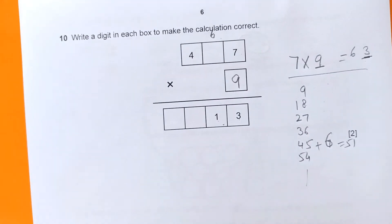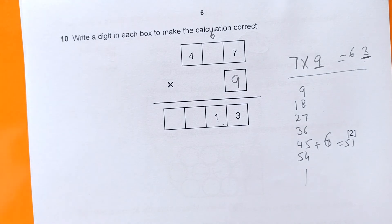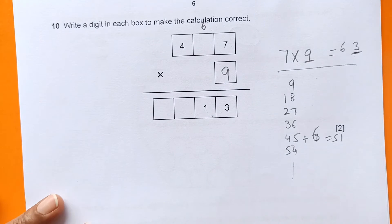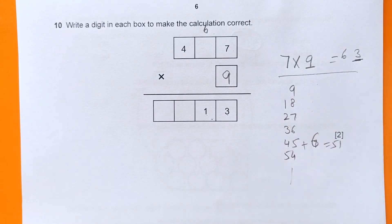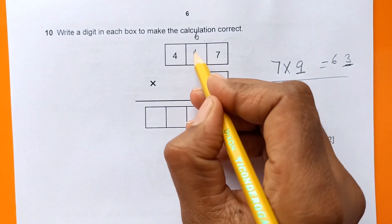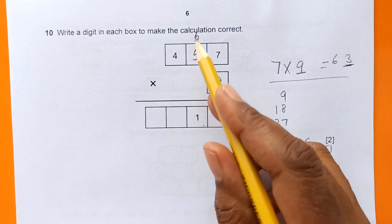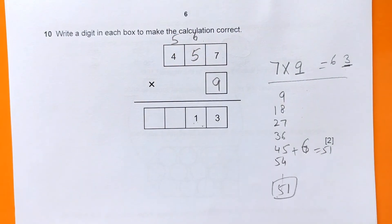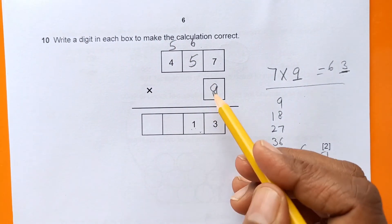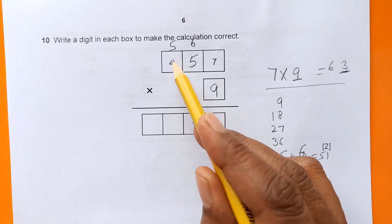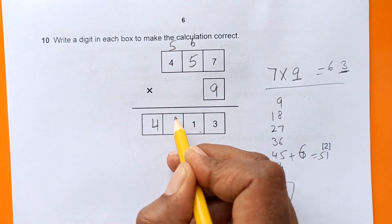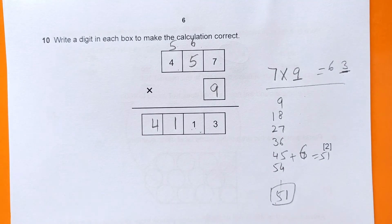Continuing Question 10: 9 times 5 is 45, plus 6 is 51. Then 9 times 4 is 36, plus 5 carry is 41. So the completed calculation works out correctly with 9 in the units column and the carries filling in the remaining digits.